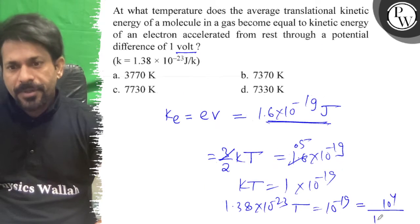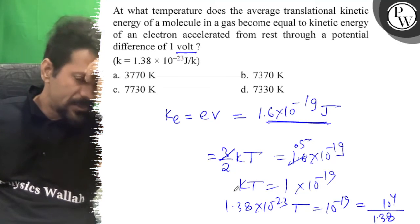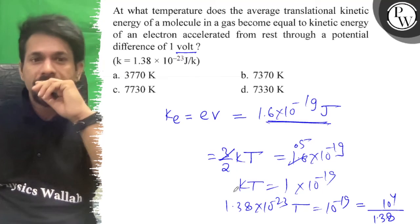So now we can divide by 1.38. If we divide 3 by 2 kT, this will be equal to 1.6 into 10 to the minus 19. Now if we divide by 1.38, this will be equal to 10 to the minus 4.